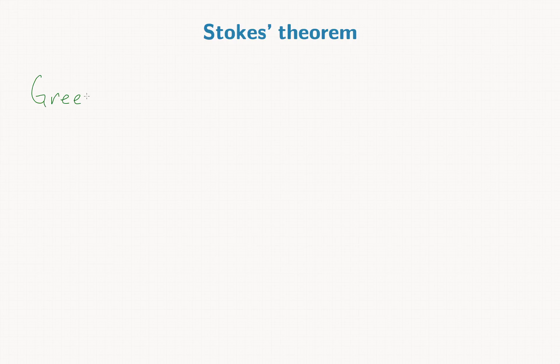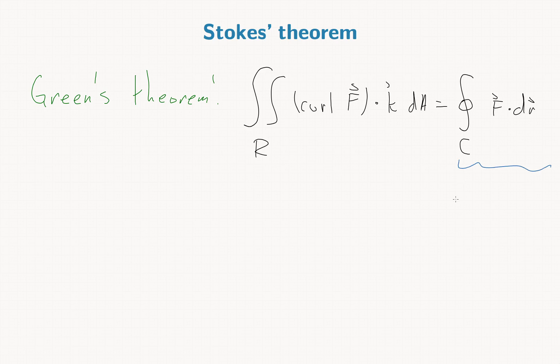In two dimensions, Green's theorem told us that the integral over some 2D region R of the k component of curl of a vector field was equal to the integral of the original vector field over the boundary of that region. And this we interpreted as a physical interpretation as circulation.